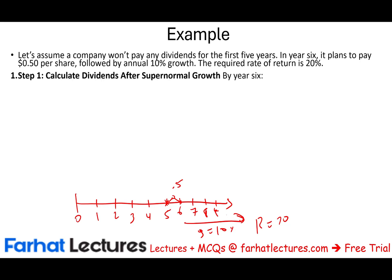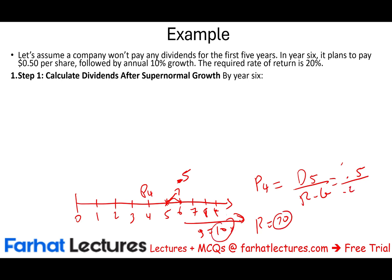Yes, we can. First, let's compute the dividend after the supernormal growth period starting at year six. We can find P4 because P4 = D5 / (R − G). D5 is 50 cents, R minus G is 20% minus 10% = 10%. Taking 0.50 divided by 0.10 gives us a price of $5. Therefore, P4 = $5.